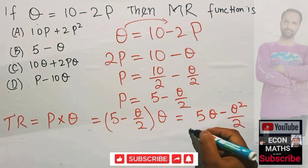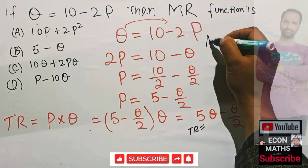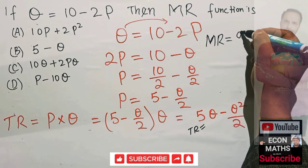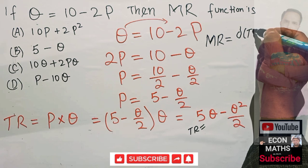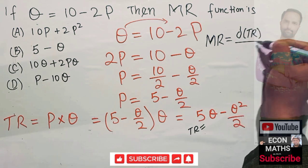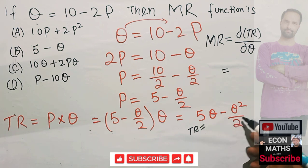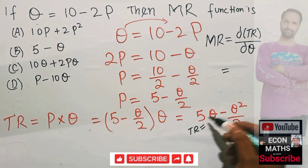Then what is marginal revenue? Marginal revenue is simply the derivative of total revenue with respect to quantity. So taking the derivative of this function with respect to quantity, derivative of Q will be 1, so we are